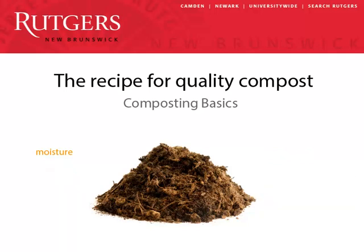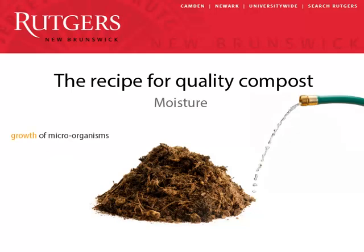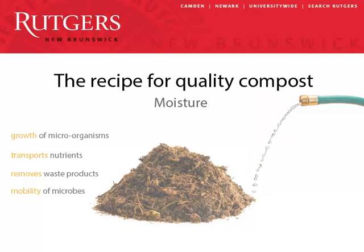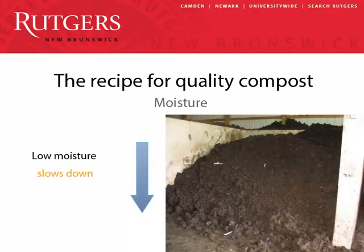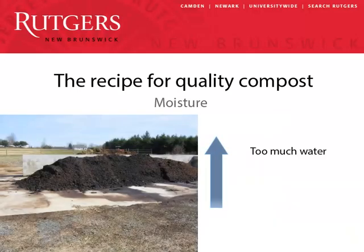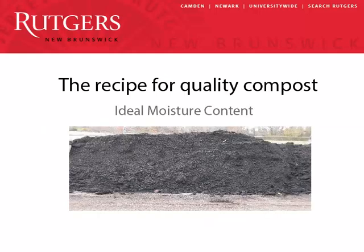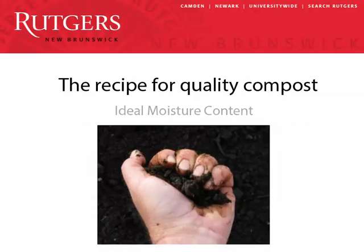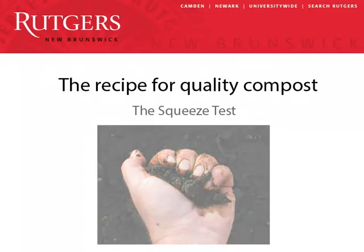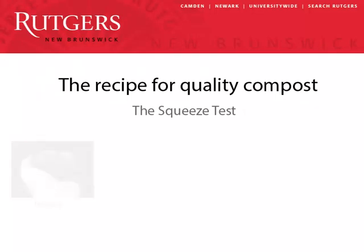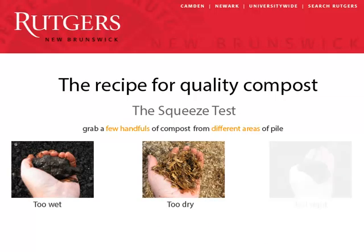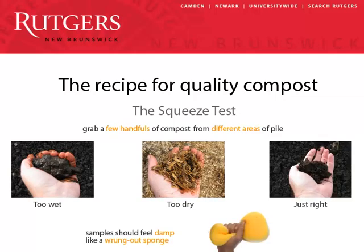Bacteria need water to thrive, but not too much. Moisture promotes microbial growth, nutrient transport, waste removal, and mobility of the microbes. Low moisture levels understandably slow down the composting process. The ideal moisture level is between 45 and 70 percent by weight, but there's no need to weigh anything. This simple squeeze test works just fine: grab a few handfuls of compost from different areas in the pile — it should feel damp like a wrung-out sponge. If not, add water until it does.